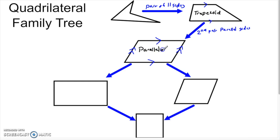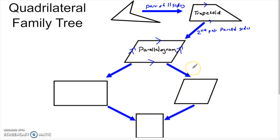A parallelogram is a really important quadrilateral. It's the first time we get a lot of interesting properties because we've imposed enough restrictions on this shape to get all kinds of interesting things to happen. I'm going to first talk through the different properties of a parallelogram, then we're going to prove them, and then we'll continue on with the rest of the family tree.